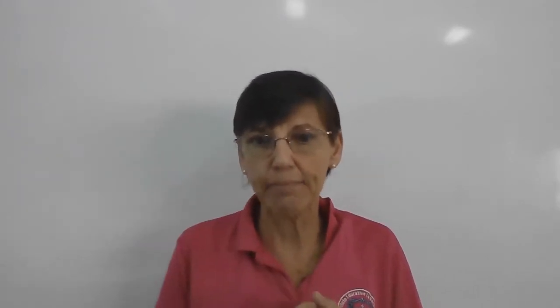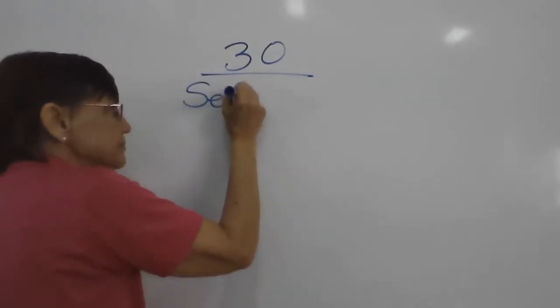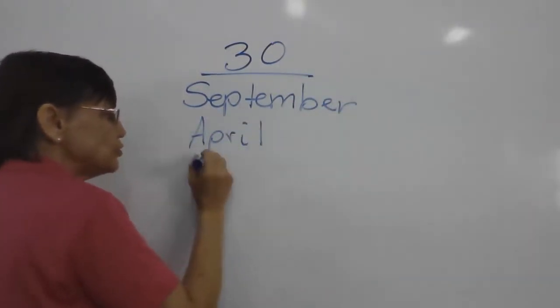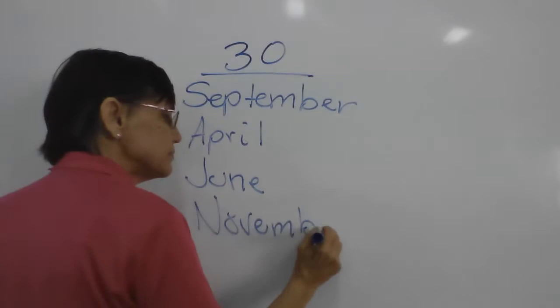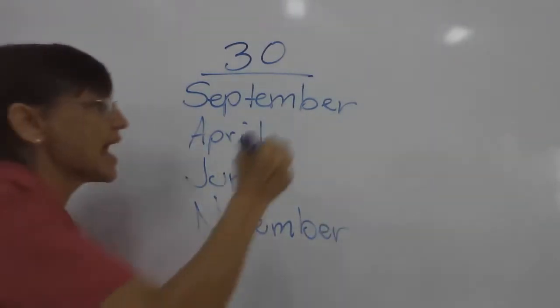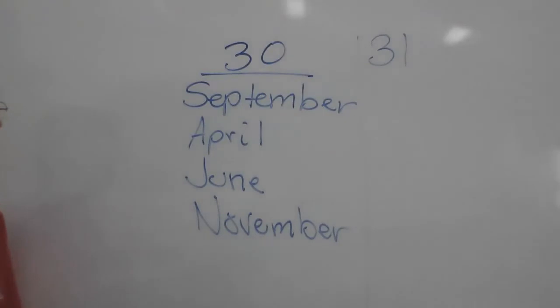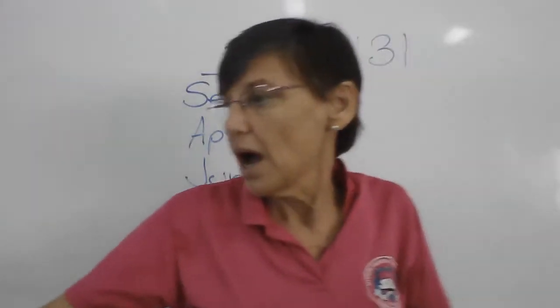Thirty days has September, April, June, and November. All the rest have thirty-one, except for February, that has twenty-eight. Okay, that's our poem. And we're going to have it. So, thirty days has September, April, June, and November. Okay, thirty days.